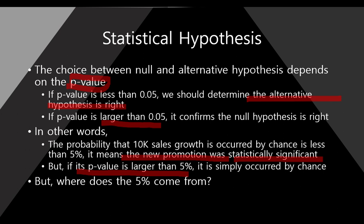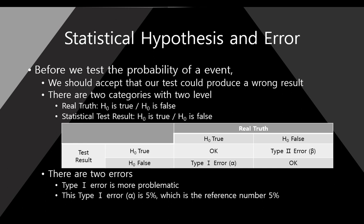Can you understand what's going on here? The statistical hypothesis is a tool for deciding between two decisions based on the p-value of 0.05. But where does the 0.05 — the 5% — come from? Here, we need to consider the statistical error. Before we test the probability of an event, we must accept that our statistical test could be wrong.